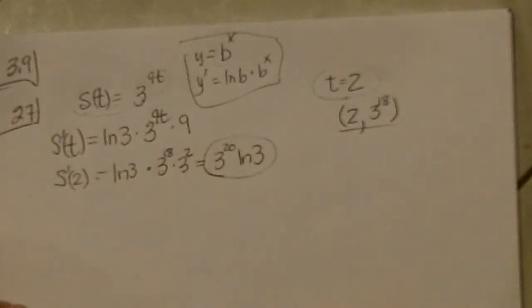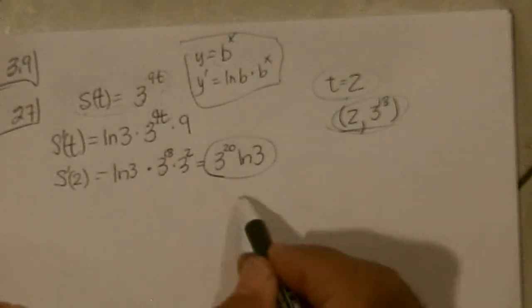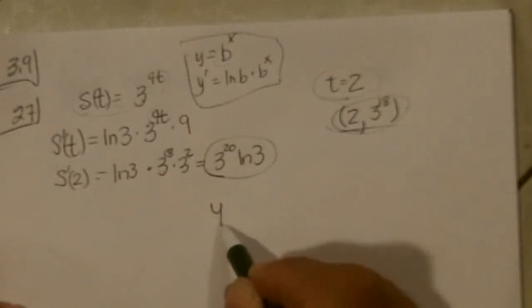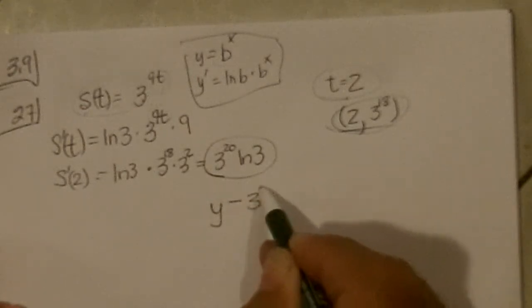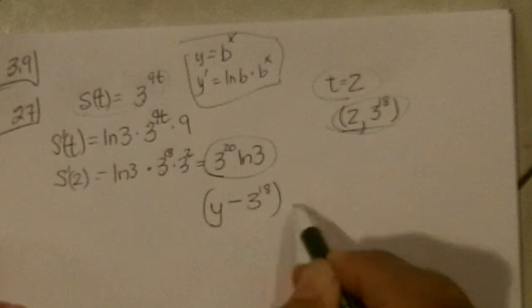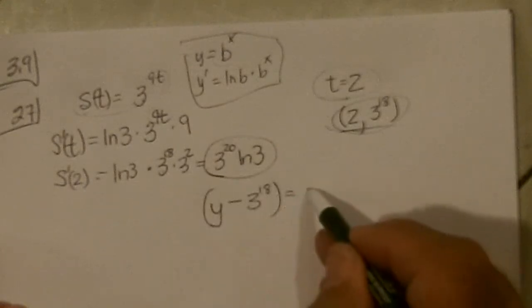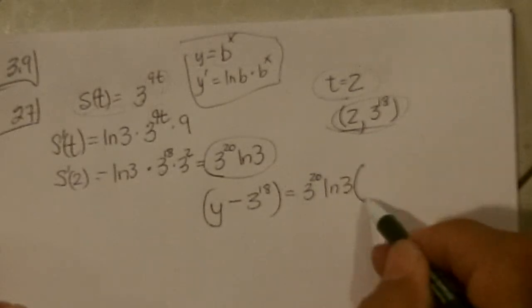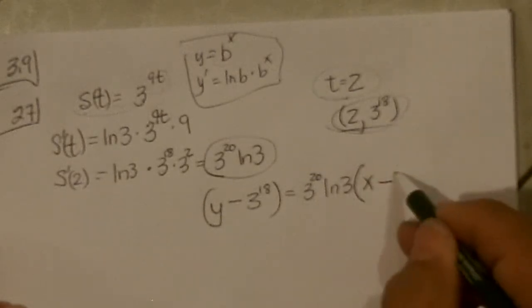There's the slope, and there's the point it goes through. And so our tangent line would be just doing it in the point slope form. Y minus 3 to the 18th equals m times x minus 2.